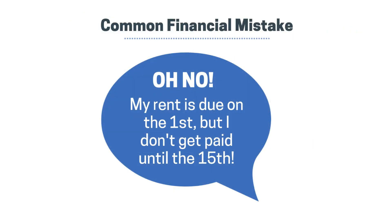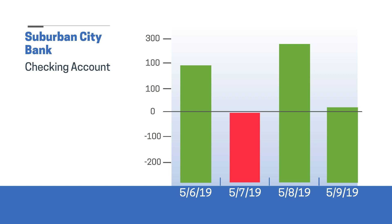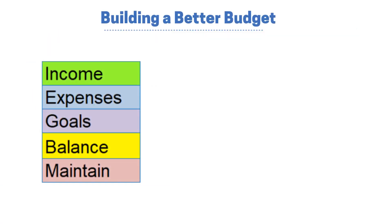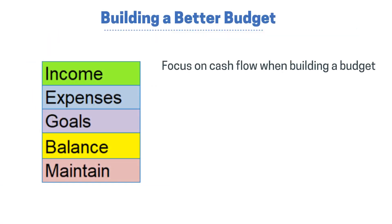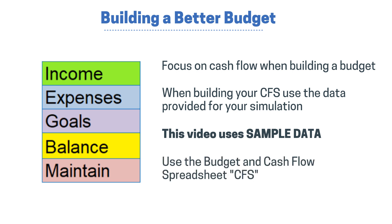Budgeting without accounting for cash flow is one of the most common financial mistakes Americans make. If your bank account dips into the negative for even just one day, it can lead to a variety of bank fees. As a result, the average American pays over $100 per year in bank fees, with most being attributed to overdraft fees. This video will walk you through a better way to budget by focusing on cash flow and demonstrating the four stages of building a budget using sample simulation data and the Budget Challenge Budget and Cash Flow Spreadsheet, or CFS.